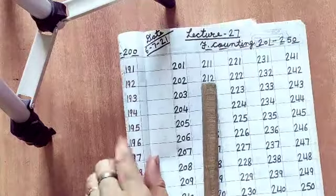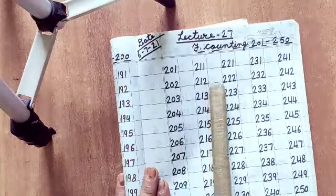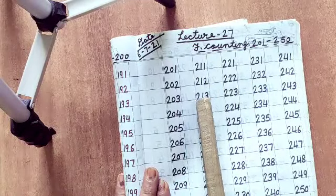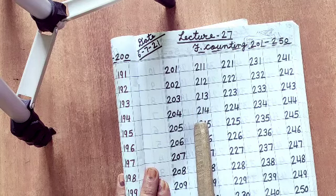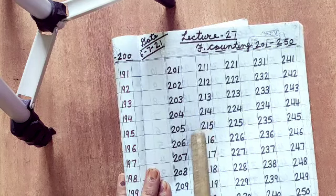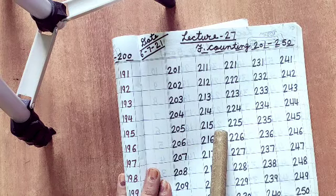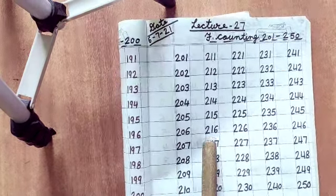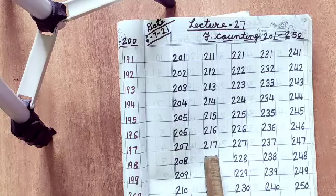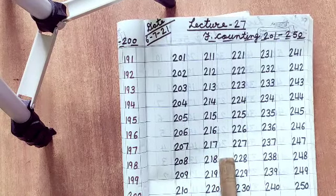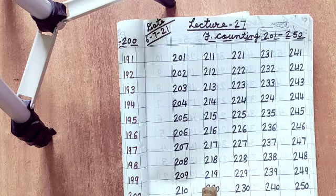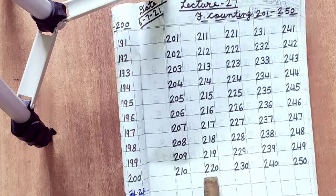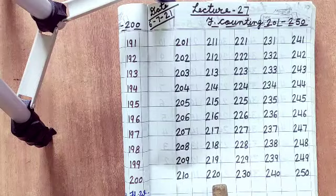After 210, what will come? 211, then after 212, 213, then 214, 215, then after 216, then after what will come? 217, then 218, then after 219, 220.